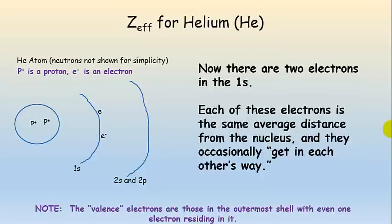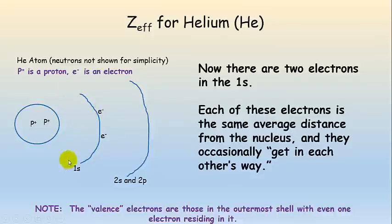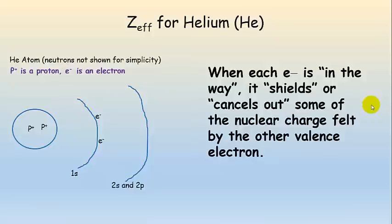Things get more complicated when we go to helium. Helium has two protons and two electrons; in the ground state they're both in the 1s orbital. Each of these two electrons is the same average distance away from the nucleus — they might be at different positions at different times, but they average out to this distance. Sometimes they're going to get in each other's way, and that is shielding. They shield nuclear charge from each other.